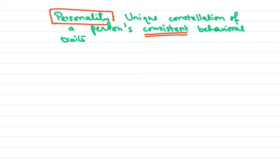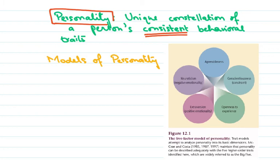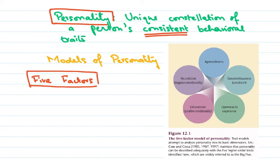Now, there are different researchers who have put forth different models of personality. I'm sure you have heard about the five-factor model of personality, which is put forth by two researchers by the name of McCrae and Costa. This is what we call the five-factor model of personality, because it is made up of five different factors that, according to McCrae and Costa, can define any individual's personality — their unique combination in any individual can completely define that person's personality.